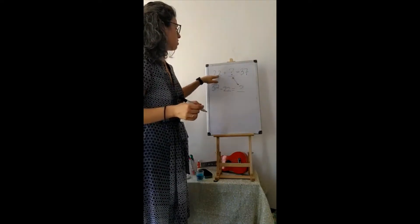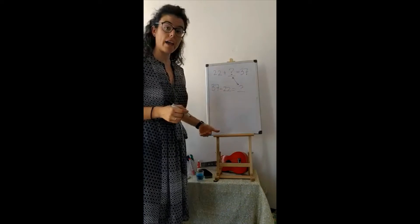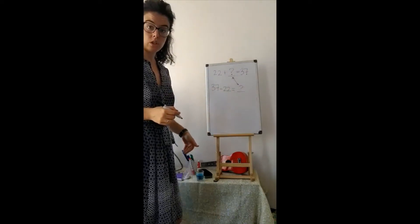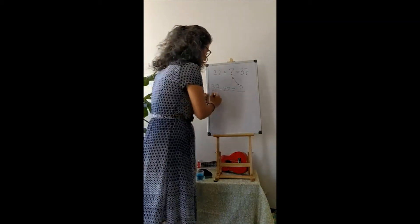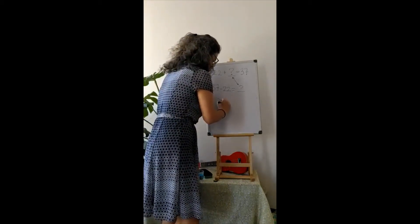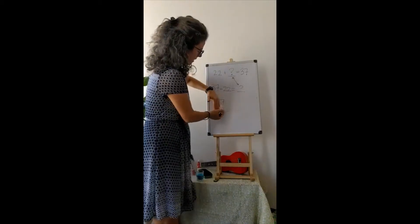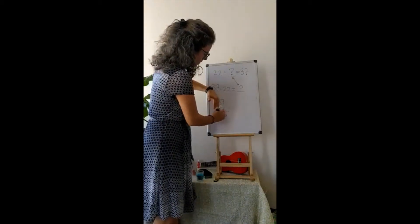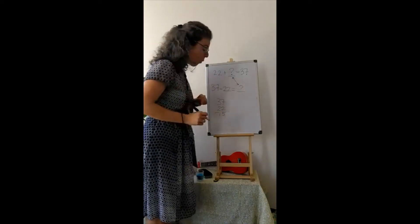Because remember, thirty-seven is made of twenty-two plus something else. So if we take away twenty-two, we know what the other part is. So I'm going to do stacked subtraction. For me, that's easier. So seven minus two is equal to five, and three minus two is equal to one.